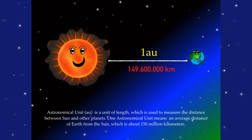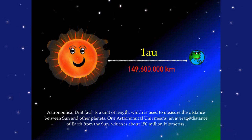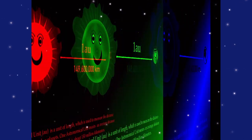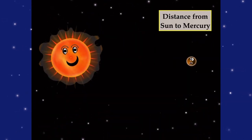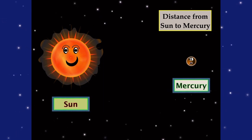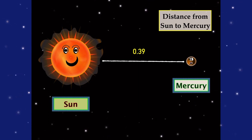which is about 150 million kilometers. Here we got the distance from the Sun to Mercury. Mercury is known as the smallest planet, and it is 0.39 AU away.